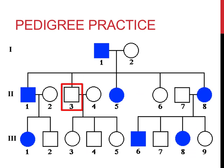Question number 3: is Roman numeral II, 3 married or not married? The correct answer would be married, because there is a horizontal line connecting this individual to Roman numeral II, 4, and they have three different children.